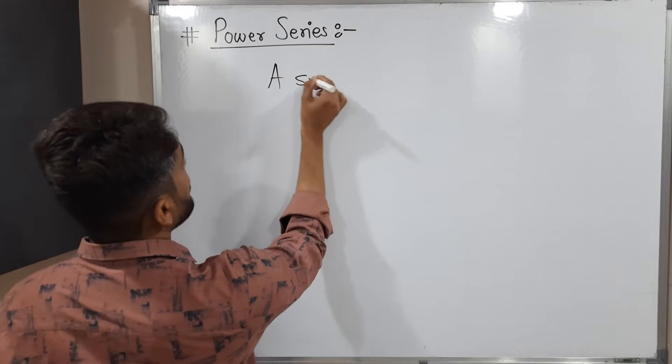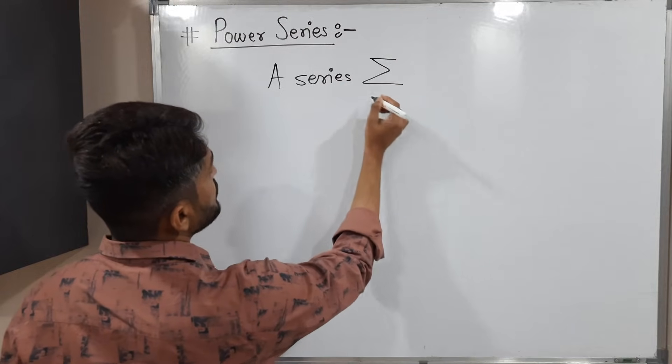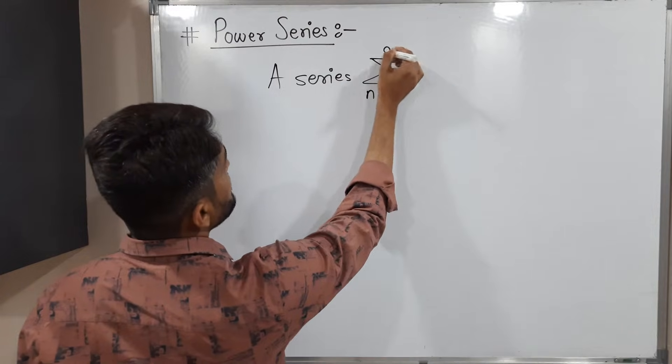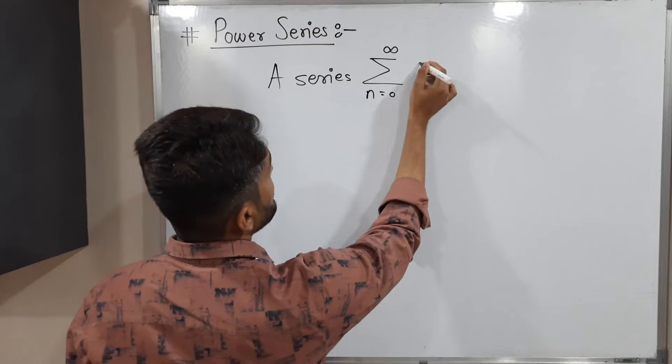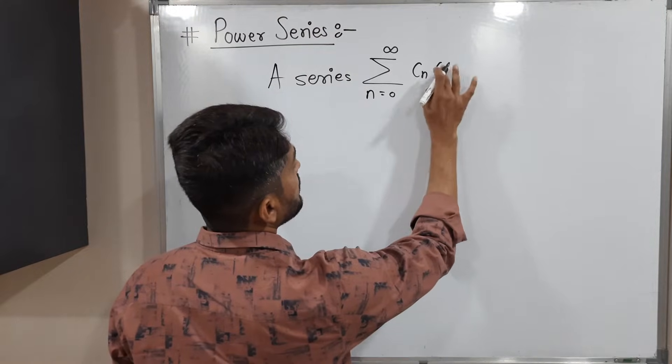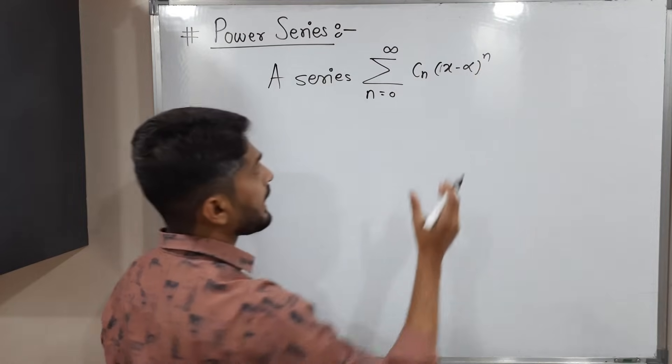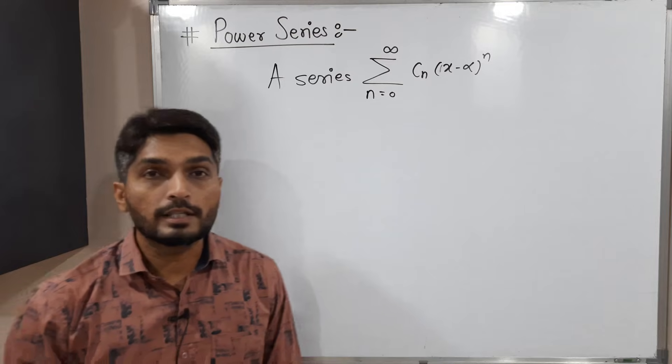A series. So obviously I should write it in the form of summation, n running from 0 to infinity, Cn times x minus alpha raised to n. Cn is a constant, right? That bracket has power n, so that's why we call it a power series.